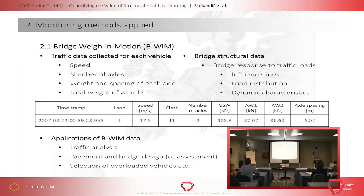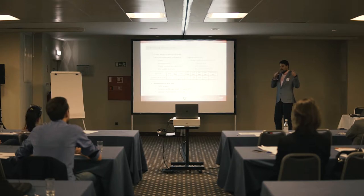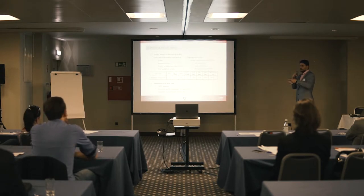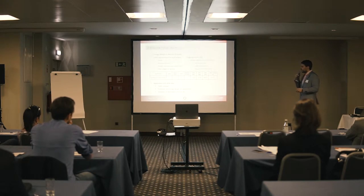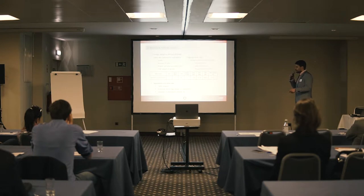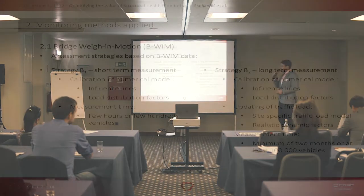Traffic data acquired by this system includes speed, number of axles, weight, and spacing of each axle for every vehicle passing the bridge. Importantly, it also gives the structural response of the bridge: realistic influence lines (not theoretical ones), distribution of load over girders for multi-girder bridges, and dynamic characteristics of the bridge. The application of the data is the most important thing — many countries have the measurements but use them only for traffic analysis, whereas we can use them for pavement and bridge design or assessment, and in some countries for selecting overloaded vehicles.